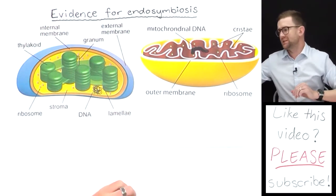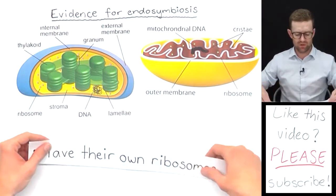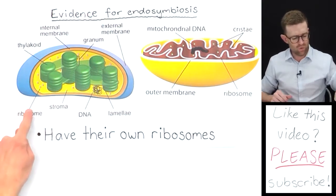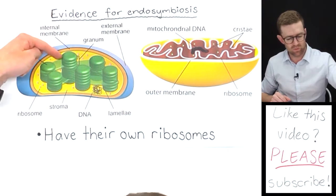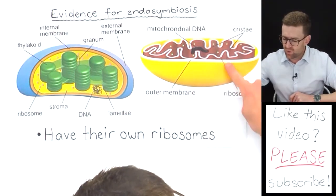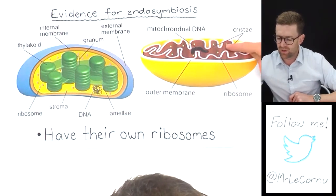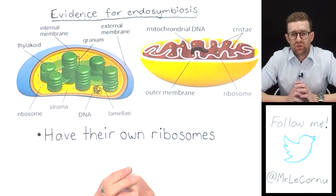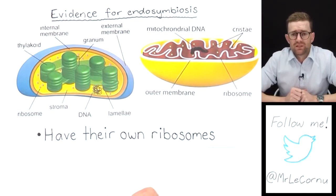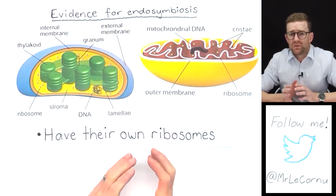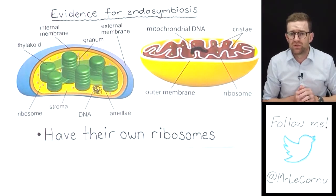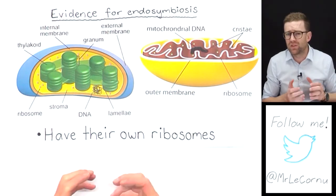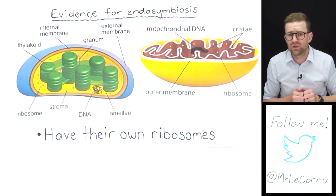Another piece of evidence is that chloroplasts and mitochondria have their own ribosomes — you can see them here in the chloroplast and here in the mitochondria. Those ribosomes inside chloroplasts and mitochondria are more similar to prokaryotic ribosomes than to eukaryotic ribosomes; they look more like the ones inside bacterial cells today.